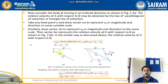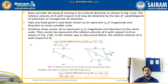First, take any fixed point O and draw vector OA to represent VA in magnitude and direction to some suitable scale. Similarly, draw vector OB to represent VB in magnitude and direction to the same scale. The vector BA then represents the relative velocity of A with respect to B, which you can clearly observe in the sketch.